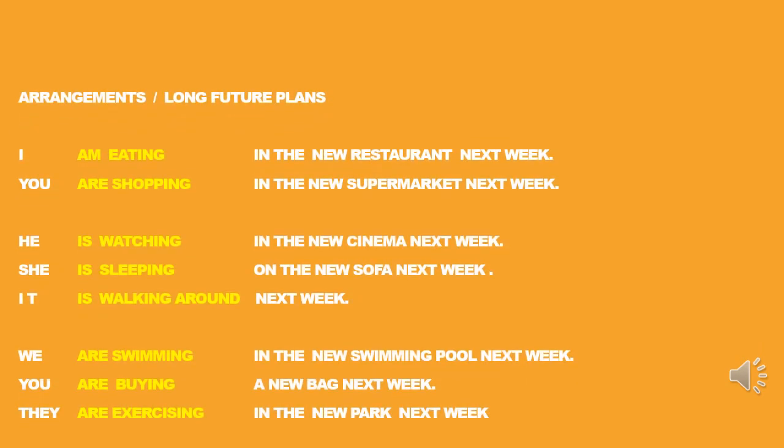More examples about the arrangement of long future plans using the present continuous: I'm eating in the new restaurant next week. You are shopping in the new supermarket next week. He is watching in the new cinema next week. She is sleeping on the sofa next week. It is walking around. We are swimming in the swimming pool next week. You are buying a new bag next week. They are exercising in the new park next week.